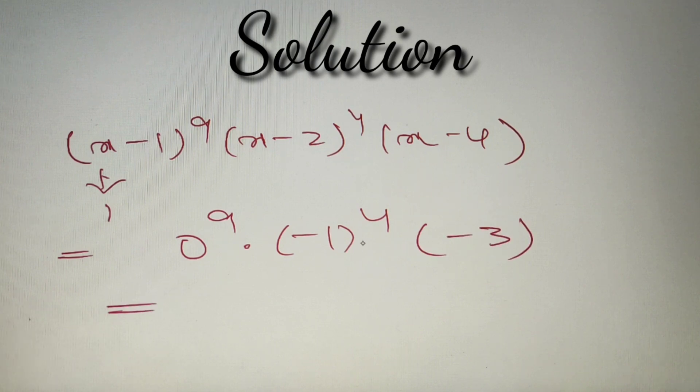Now no matter what is the answer for the rest two terms, we can say that the answer will be 0 because 0 raised power 9 is 0 and that multiplied with any number will give us the answer as 0. So our final answer for the sum of all the coefficients for the polynomial is equal to 0, and according to the given options it is option A.